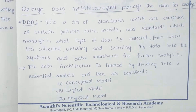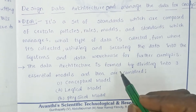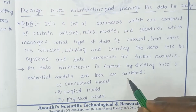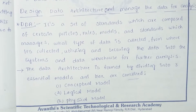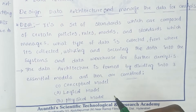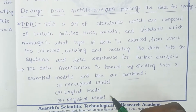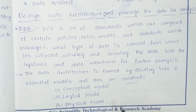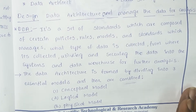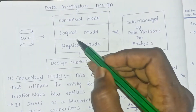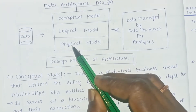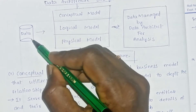The data architecture is formed by dividing into three essential models which are then combined. These three types of models are: conceptual model, logical model, and physical model. We have a diagram for the data architecture design which covers all three of these models.